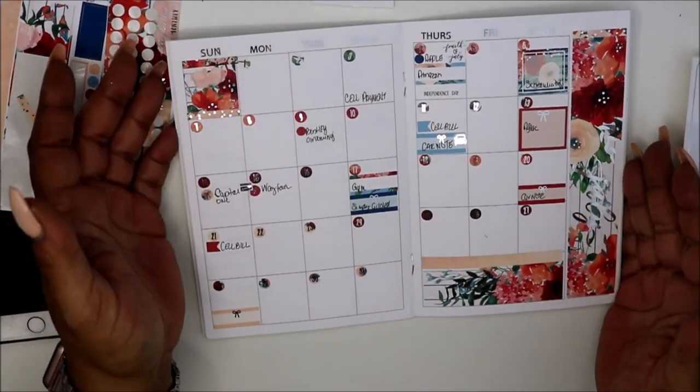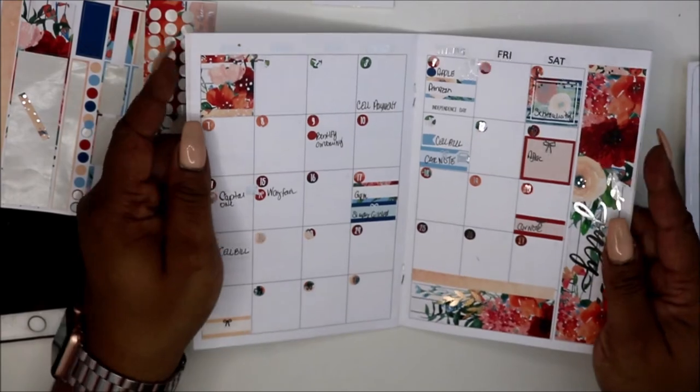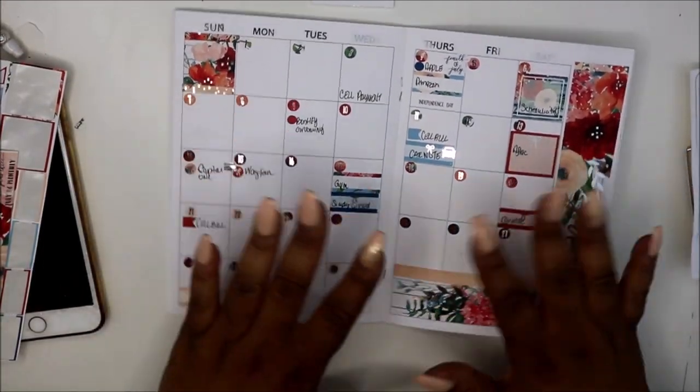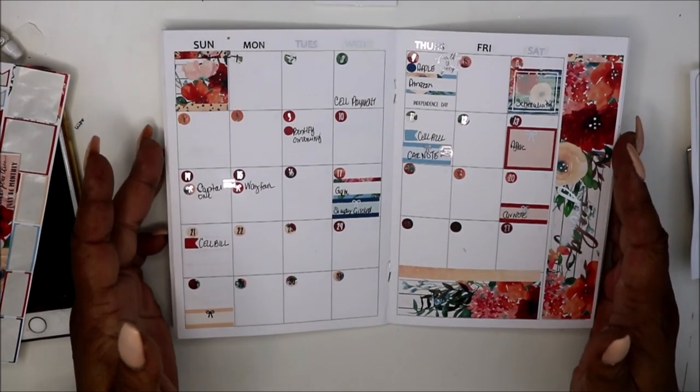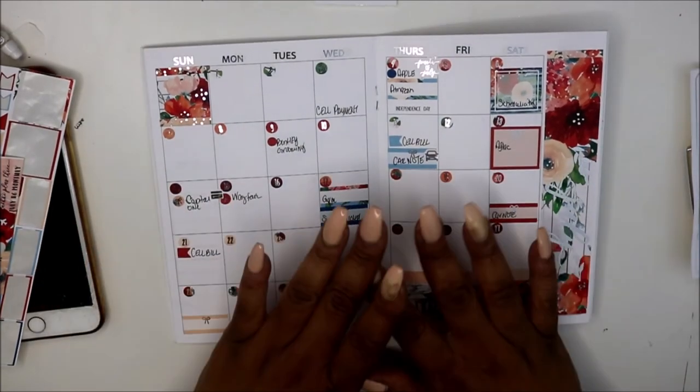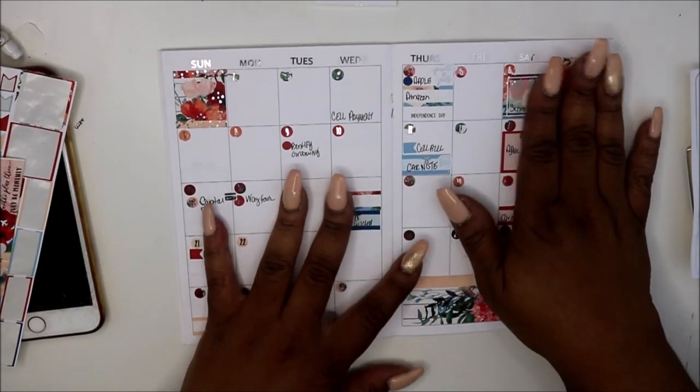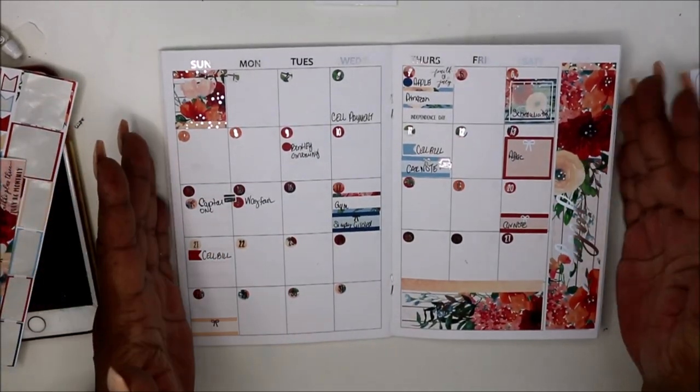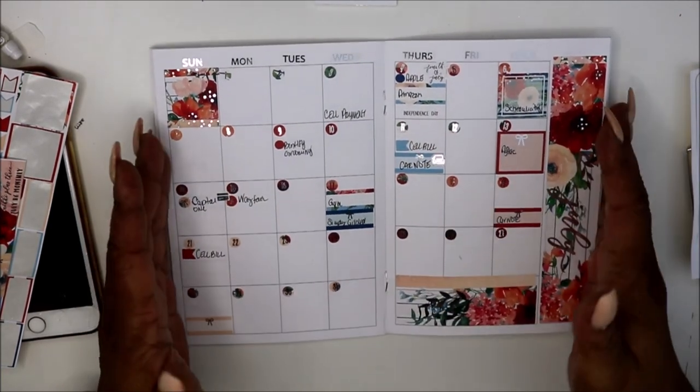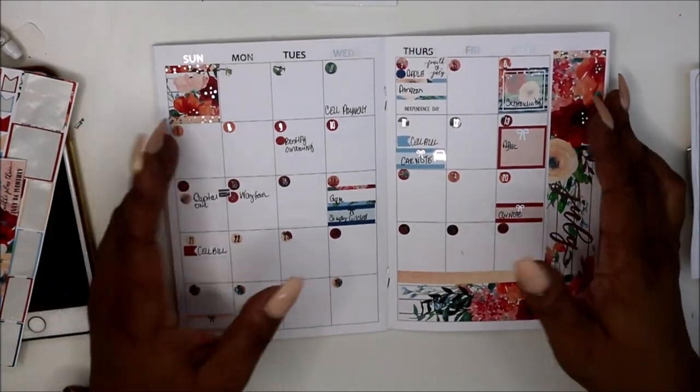Okay y'all so I'm finished and this is what my monthly is looking like for the July and in my B6. So I hope you guys enjoyed this video. Give me a little feedback in the comment section, let me know how you like this layout. I love Nikki's stickers, again I will try to remember to leave the link in the description box below and I will see you all in my next video, bye.